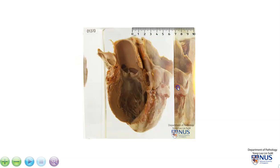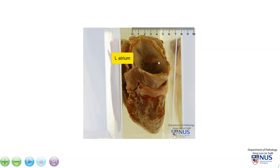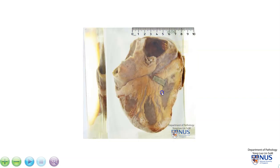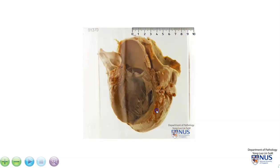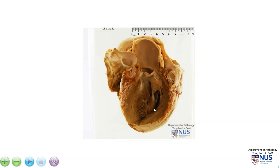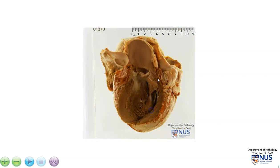Rotating it the other way, here is the left atrium and here is the right atrium. The main pathology is located in the left-sided valves of the heart. So let's take it one by one and first focus on the aortic valve.